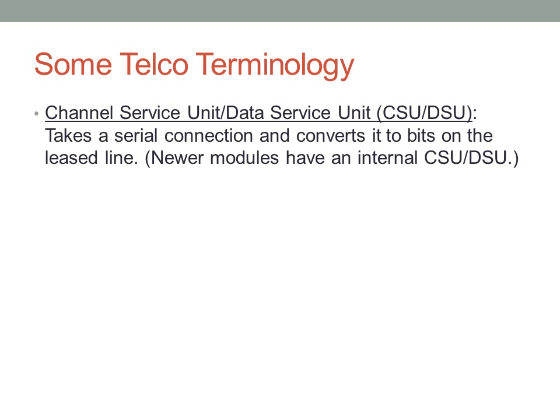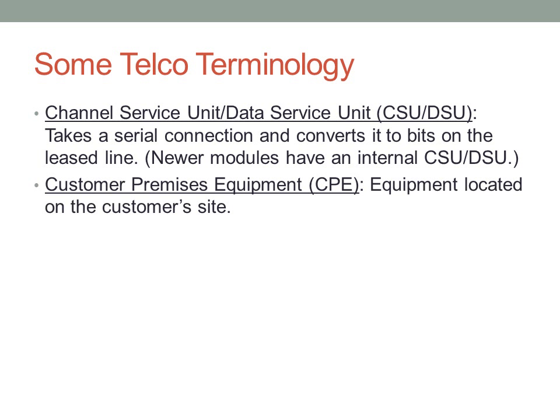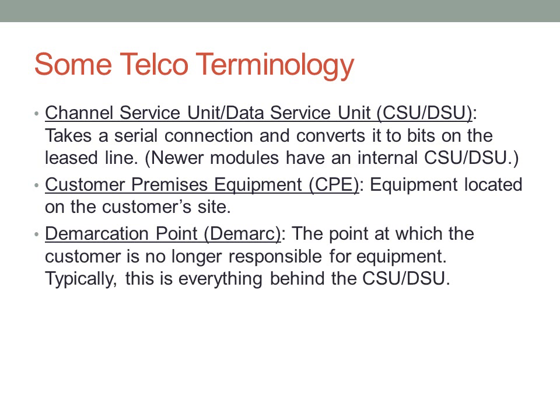Some telco terminology: there's what's called a Channel Service Unit / Data Service Unit (CSU/DSU). This takes a serial connection and converts it to bits on a leased line, on a two-pair line. Newer modules have this built in, but you need to know what a CSU/DSU is. There's also Customer Premises Equipment (CPE) — the equipment located on the customer's site, whether or not it belongs to the customer. And there's the demarcation point, which is the point at which the customer is no longer responsible for data or equipment — typically everything behind the CSU/DSU.